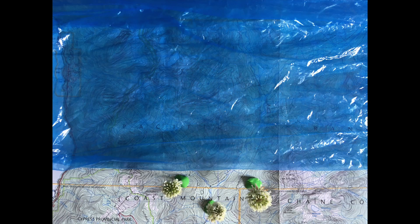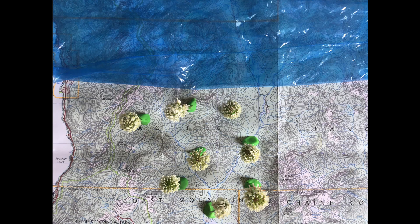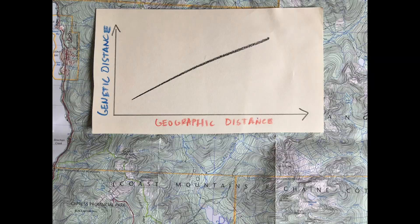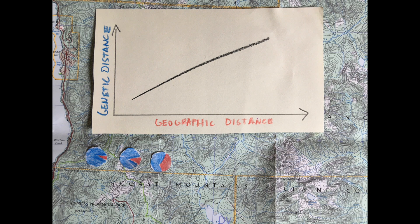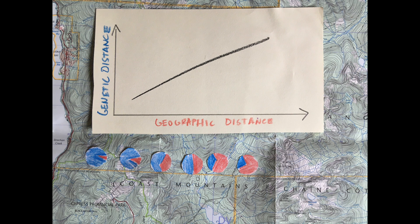individual-level dispersal, the distance offspring move from the parents, and two, population-scale movements, such as populations expanding out of glacial refugia as glaciers retreat. These processes often lead to a pattern of increasing genetic dissimilarity with geographic distance, or isolation by distance.